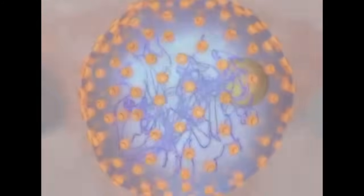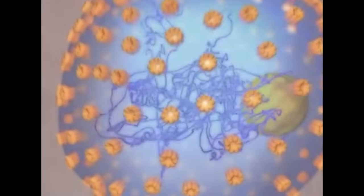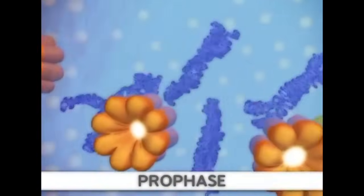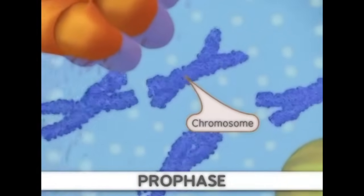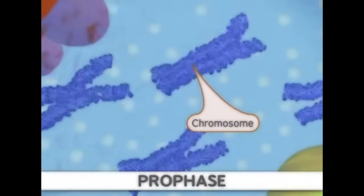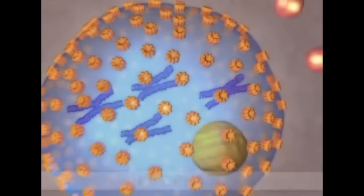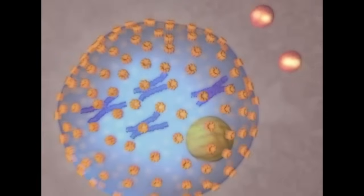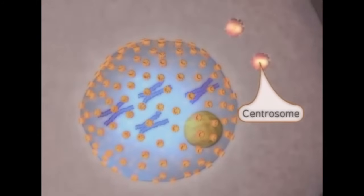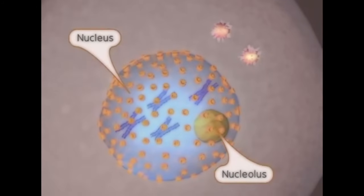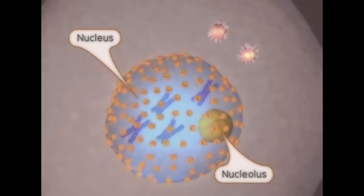During the first stage of mitosis, called prophase, we first see the classic chromosome structure. This occurs through a condensation process. At the same time, protein strands called microtubules appear from the centrosomes in animals. Finally, a structure found within the nucleus, the nucleolus, disappears.